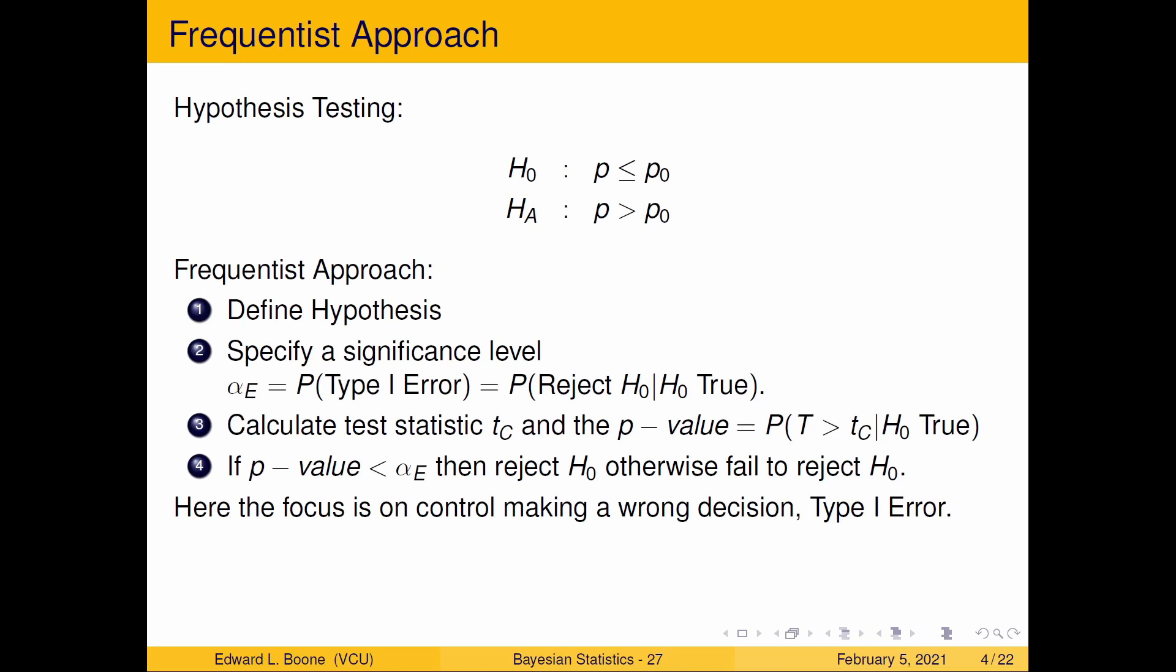Then you would collect your data, calculate the test statistic t sub c, and then get a p value. Then you would compare this p value to your cutoff significance level, and if it's less than that then you would reject, otherwise you would fail to reject. Here the focus is on control of making the wrong decision, the type one error. We're really trying to control that type one error because the parameter is fixed and we don't know whether we've made the correct decision or not.